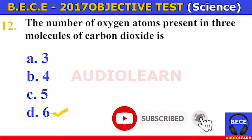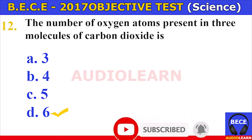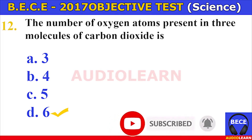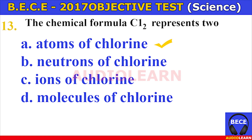Number eleven. Which of the following apparatus is not required in the process of distillation in the laboratory? A. Condenser, B. Evaporating dish, C. Bunsen burner, D. Round-bottom flask. The answer is B. Evaporating dish.